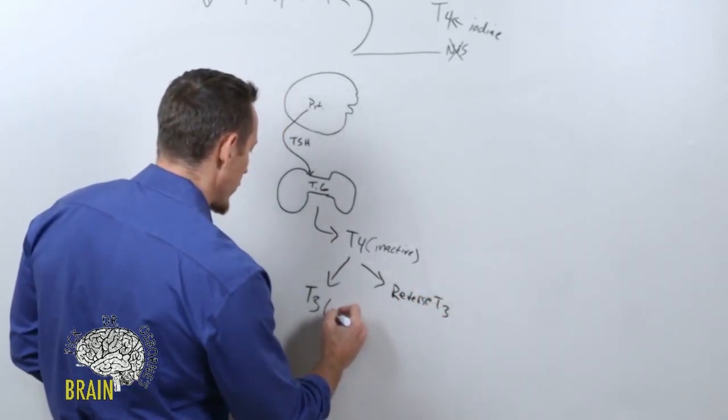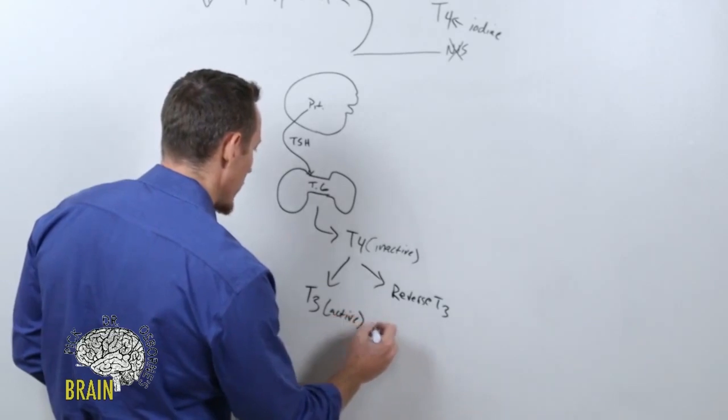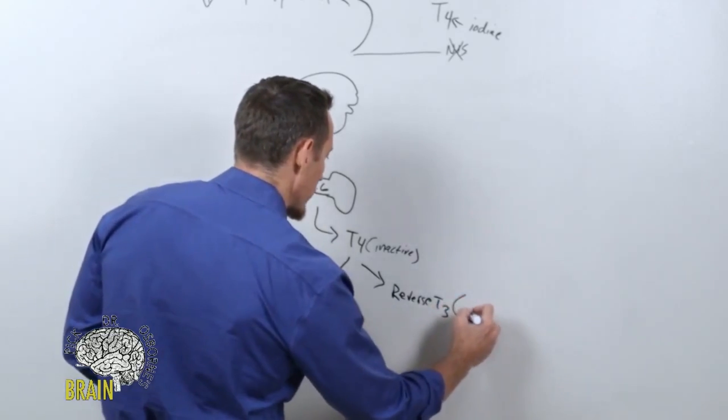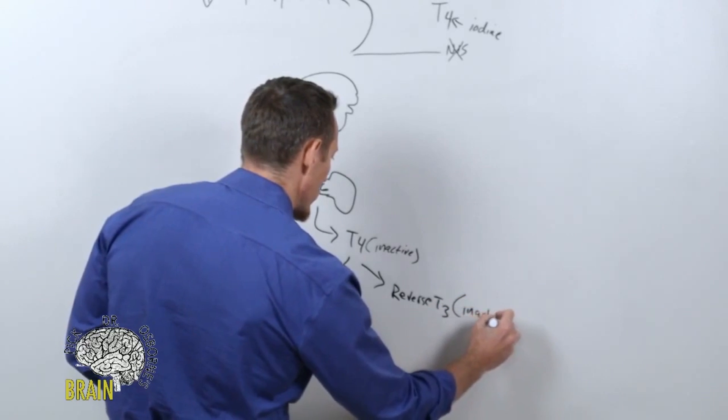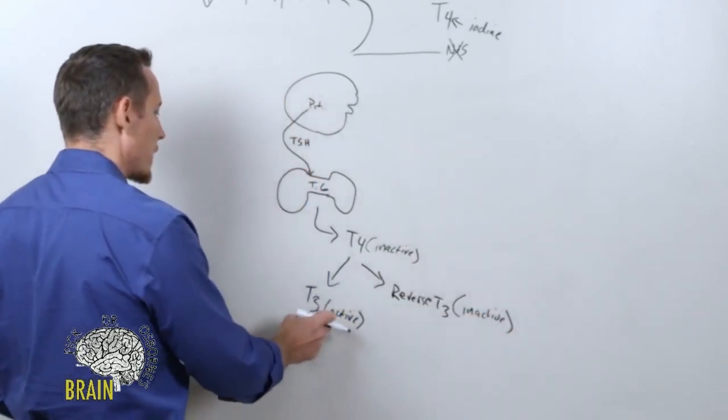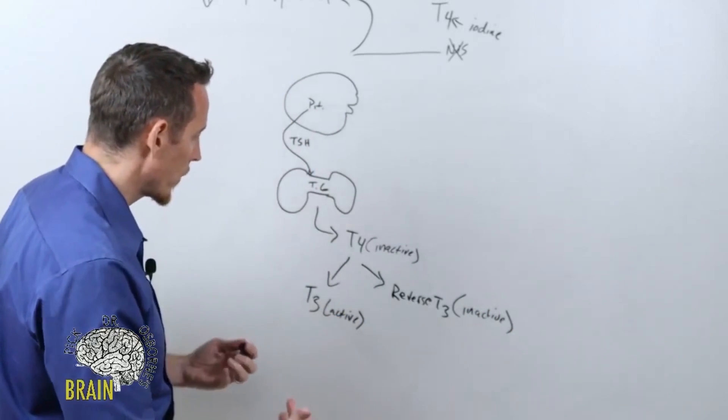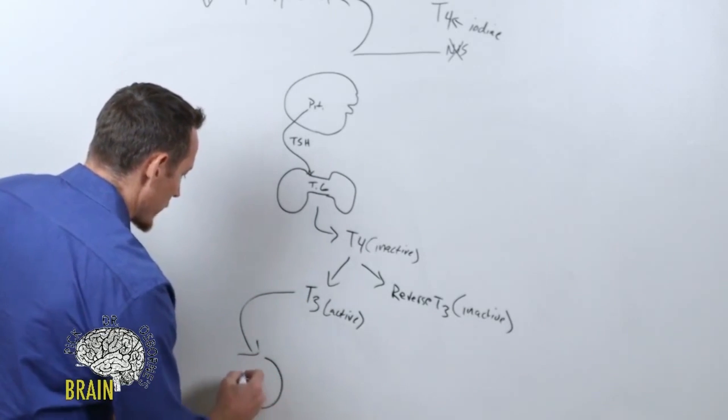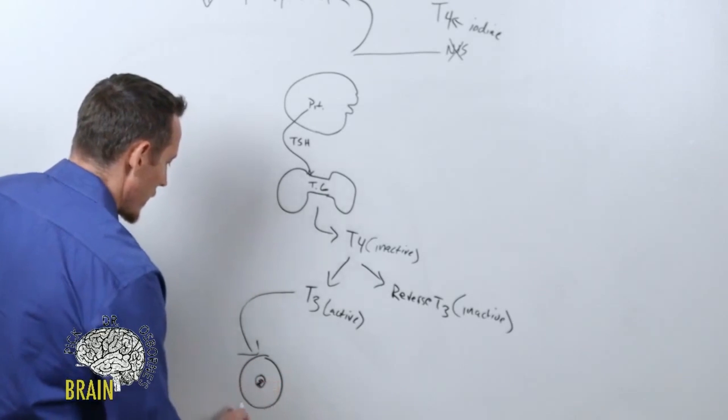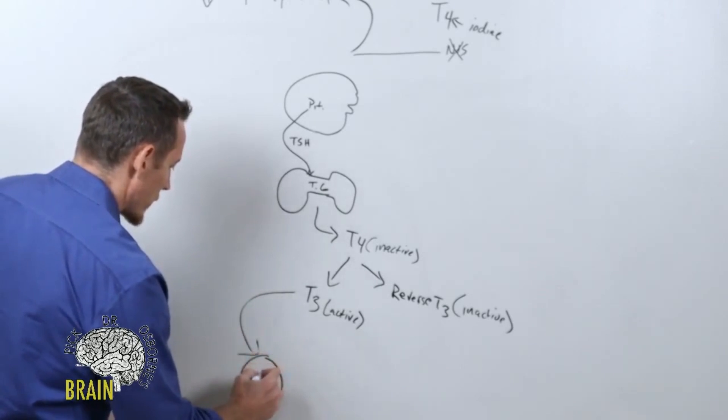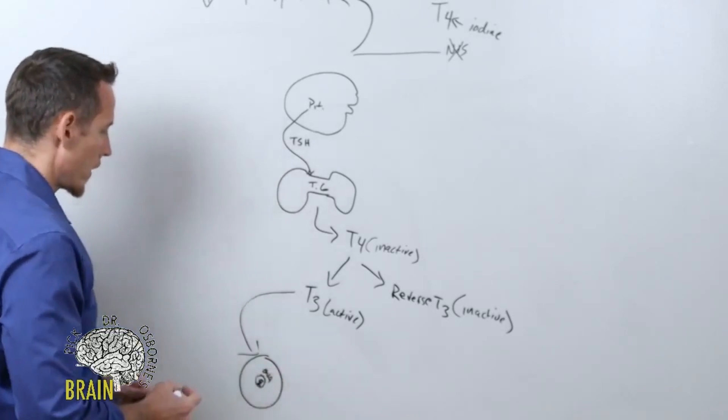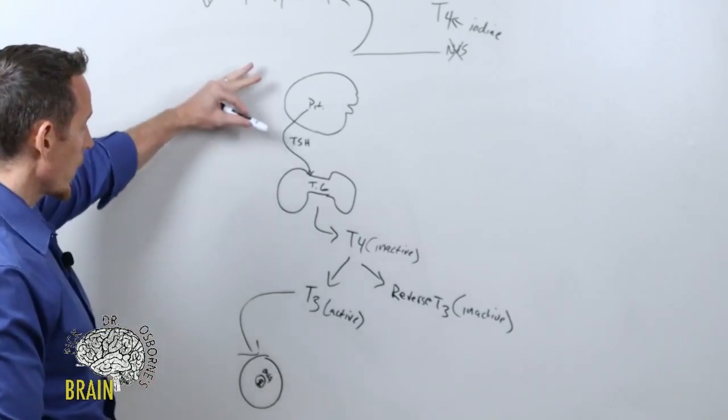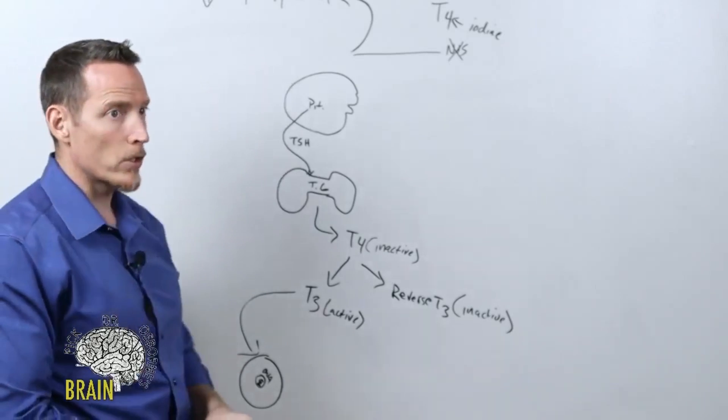Although we can also make a substance called reverse T3, T3 is the active thyroid hormone. So this one is active. Reverse T3 is also inactive - doesn't work, doesn't do much for your metabolism. It has about one one-thousandth of the activity as your active thyroid hormone. Once this happens, T3 is the active form that communicates to your cell. It communicates to the DNA inside of your cell through a receptor on the surface of your cell nucleus. This is why it's not as simple as your doctor's made it out to be.